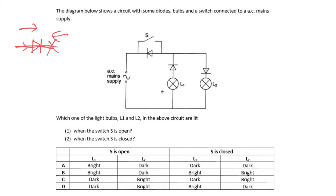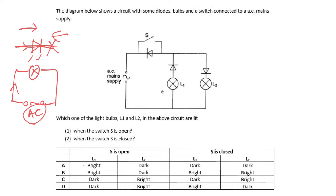Another thing to clarify: some students think the bulb needs to be continuously lit to be considered bright. With AC current, the bulb flickers — one moment current flows clockwise, the next anti-clockwise. For this question, as long as current flows through and it flickers, even if not continuous, it is considered bright and lighted up.